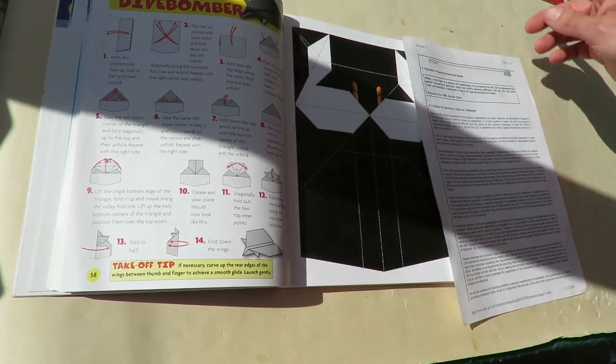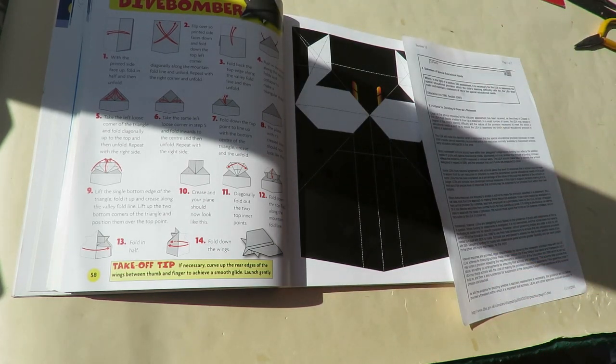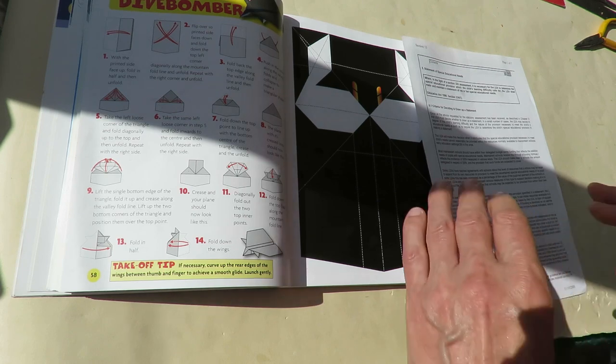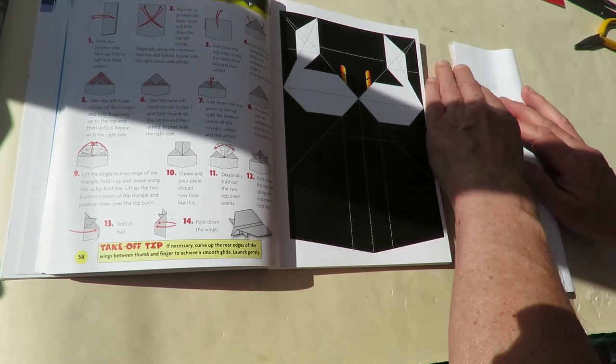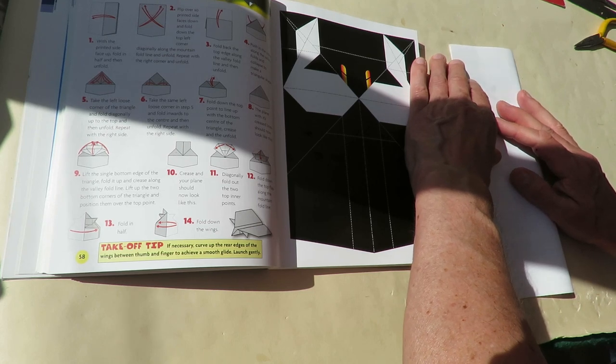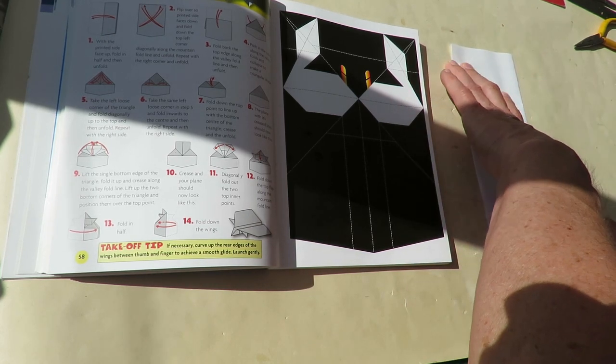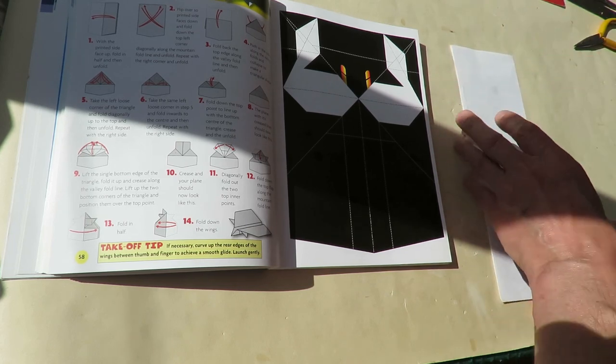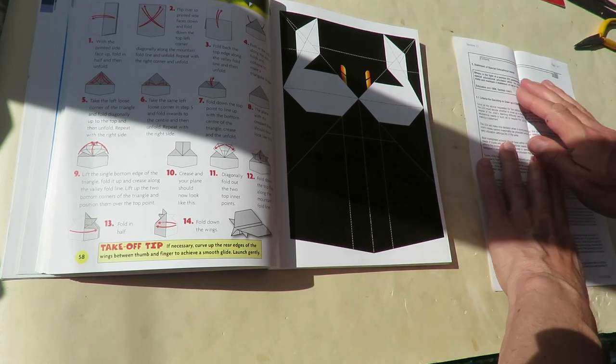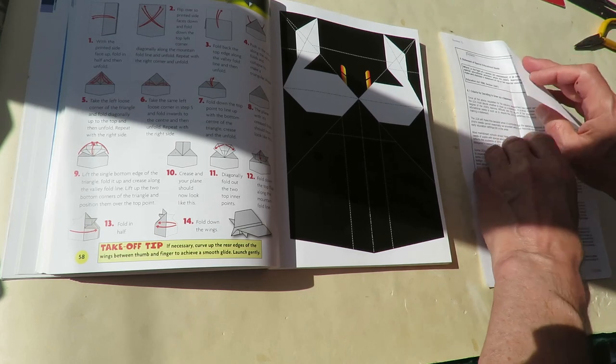So a bit of paper. I'll put the glasses on. Start off with the easy one. Fold it in half.